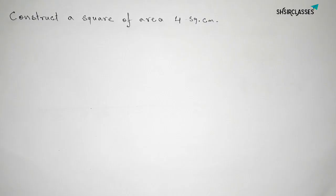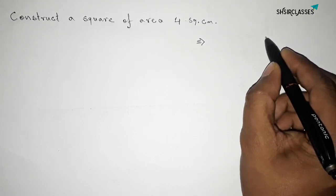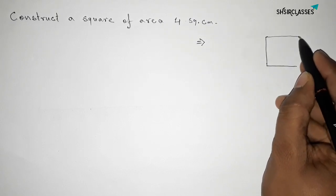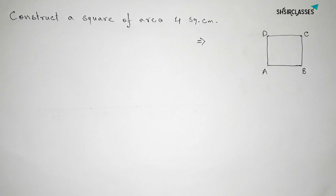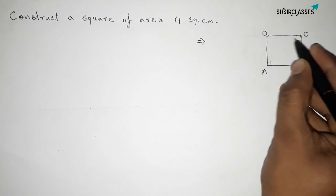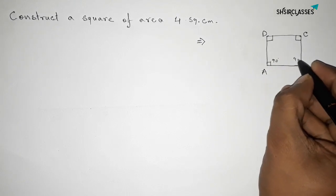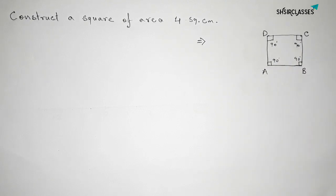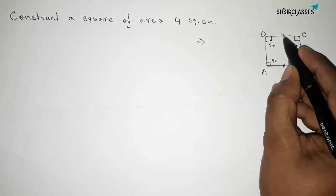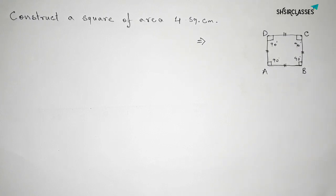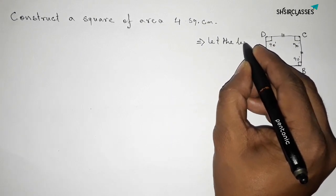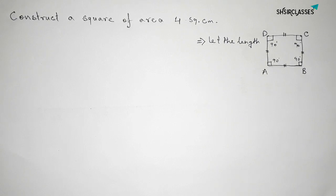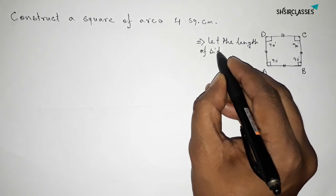First of all we have to find the length of the side of this square. Let us draw a square roughly — this is A, B, C, D. We know that all the angles of a square are equal and 90 degrees, and all the sides of a square are equal. We don't know the length of the sides, so let the length of each side of this square be x centimeters.